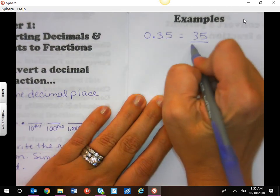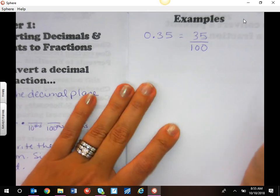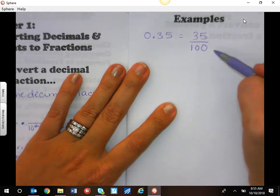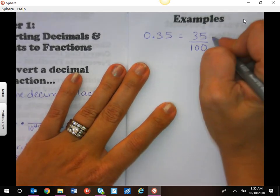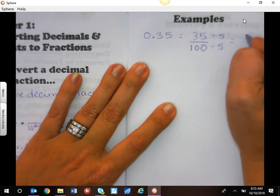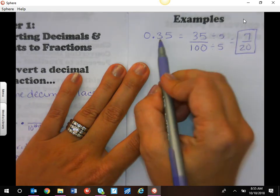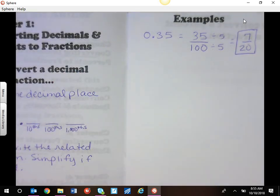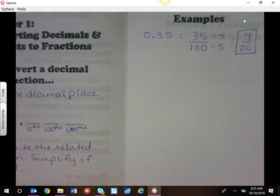So we're going to write it as we say it, and we know that back to our division rule, we know that these both reduce by five for seven twentieths. So 35 hundredths is written as a fraction, seven twentieths.